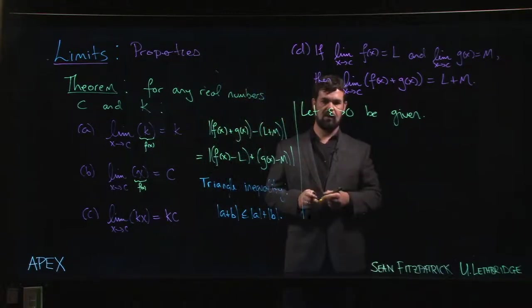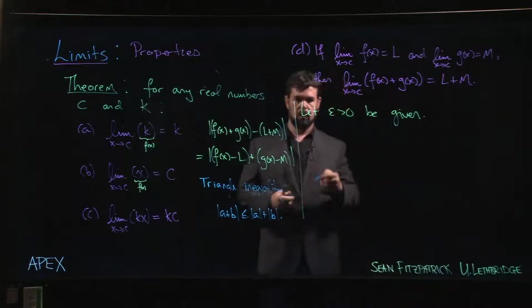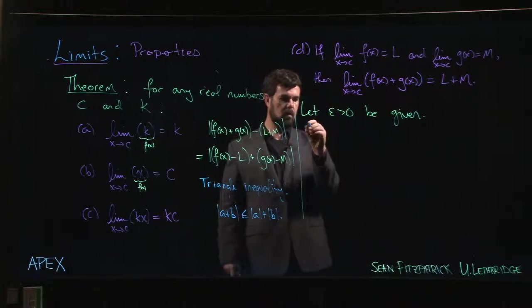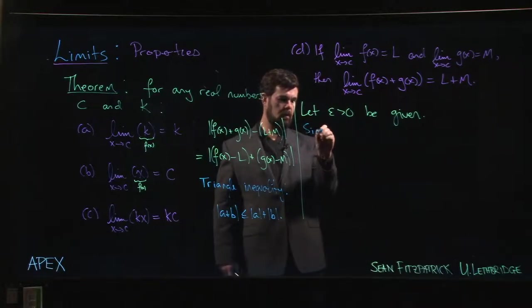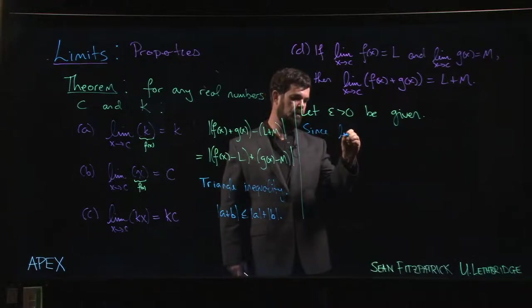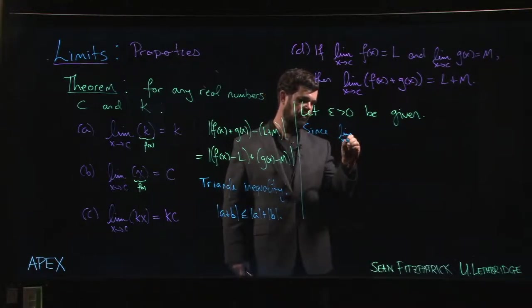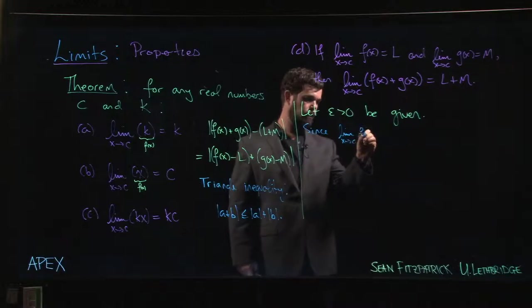Well, since the limit as x goes to c of f(x) is L, that means we can find some, let's say, delta_1.